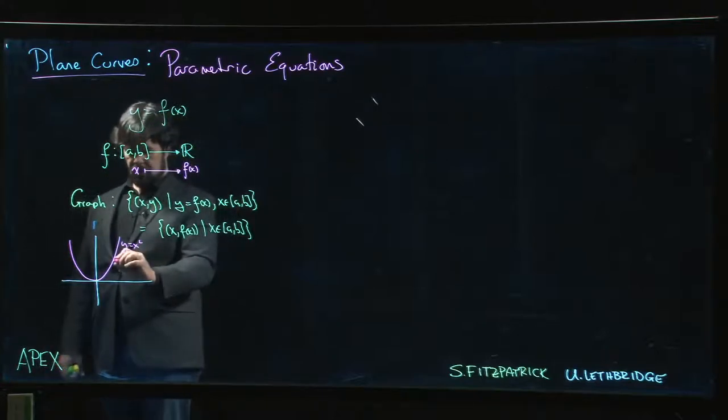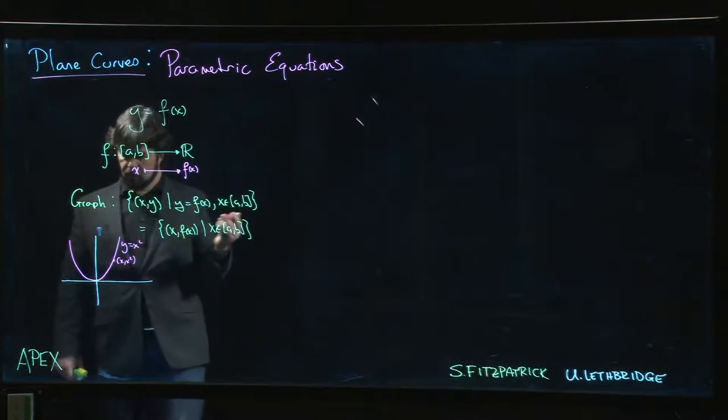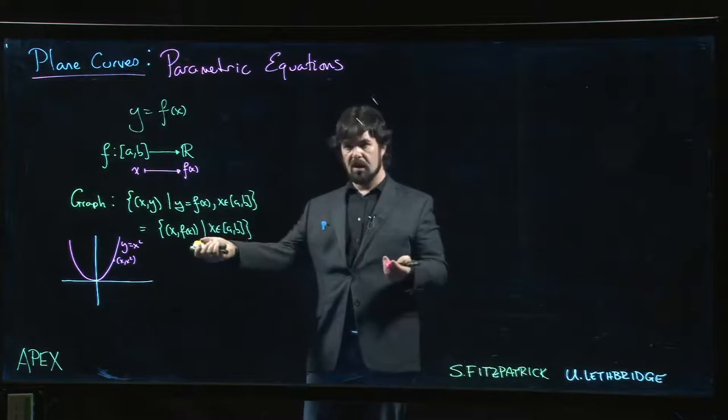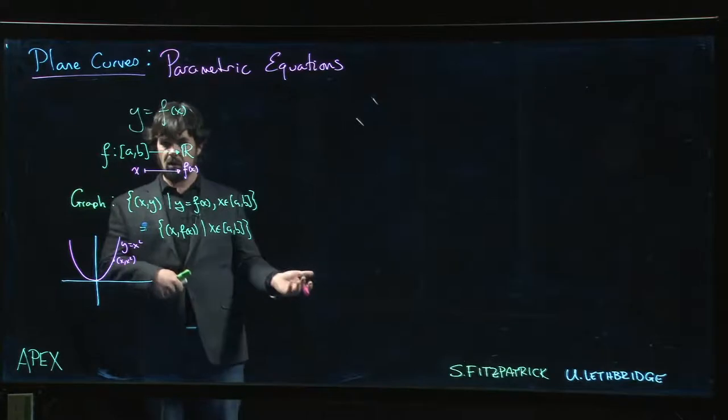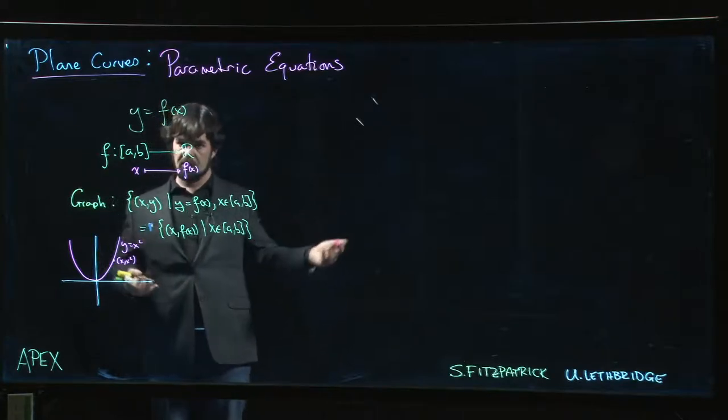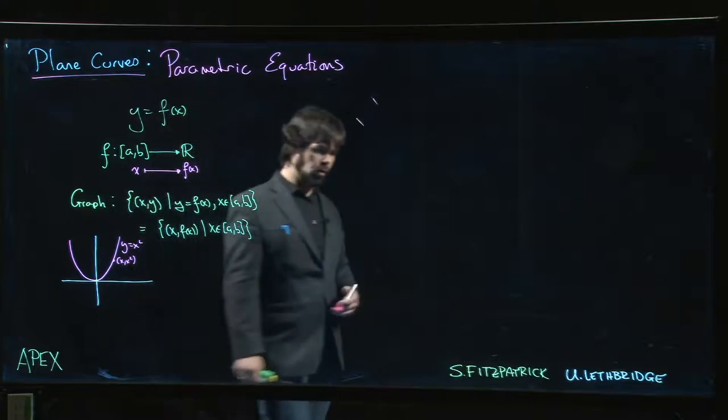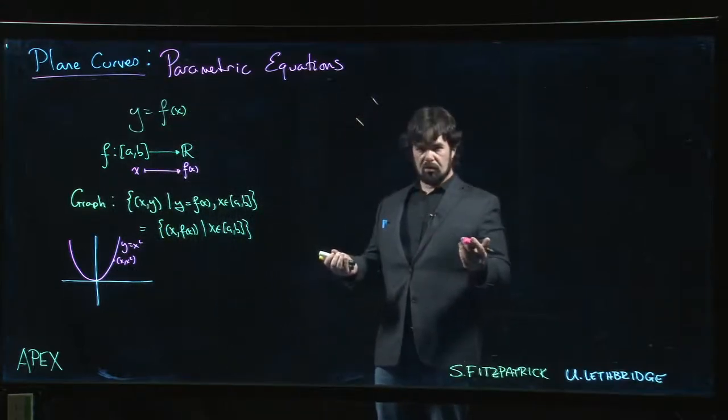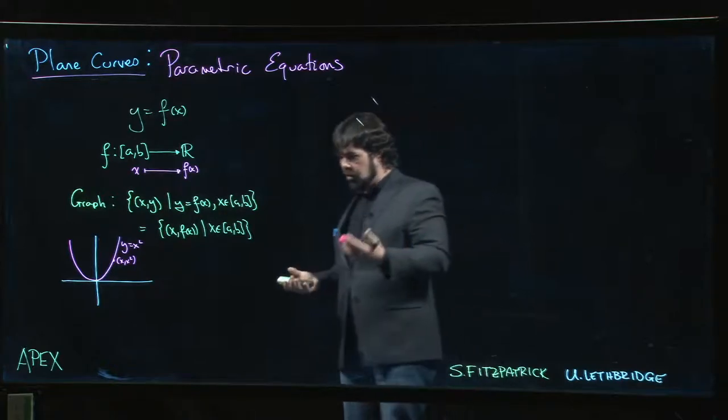This is the set of all points: every point on the graph is of the form x, x squared. It fits this definition. But we also know there are lots of curves that we can't express as graphs. Circles, we just finished conic sections: ellipses, hyperbolas, these are not graphs of functions. Even a parabola, if it opens horizontally, is not the graph of a function.